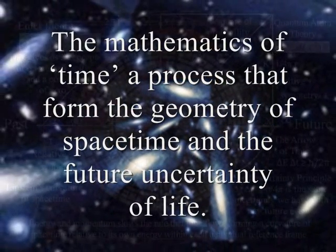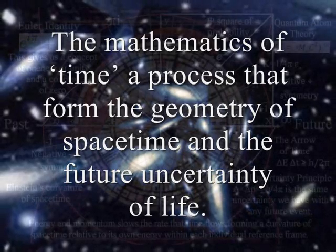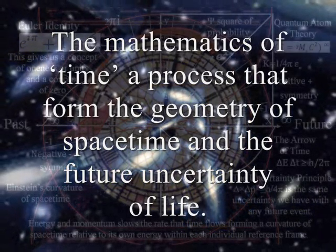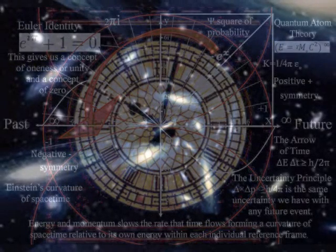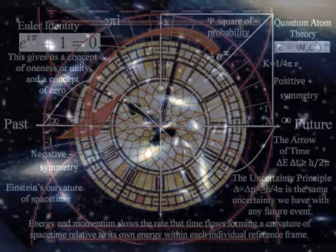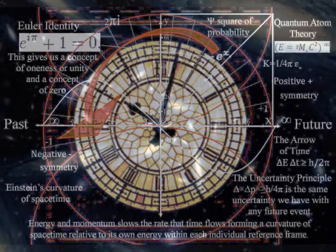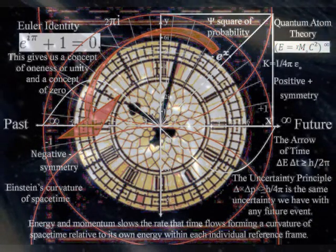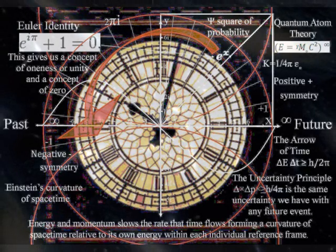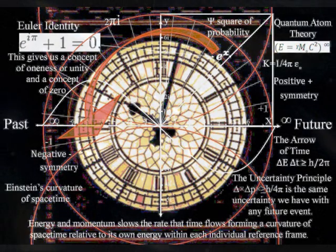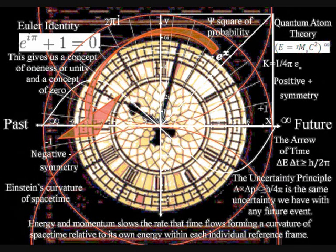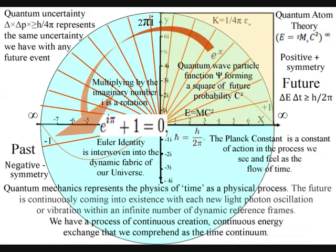The mathematics of time — a process that forms the geometry of space-time and the future uncertainty of life. This video explains a new theory called quantum atom theory, an artist's theory on the physics of time as a physical process. Because this theory is based on a physical process, it can be totally explained by physics and mathematics, unlike previous theories that have only been able to explain time using philosophy and metaphysics. The mathematics of this theory will be quite easy to follow, because it is based on the geometry of a three-dimensional physical process.